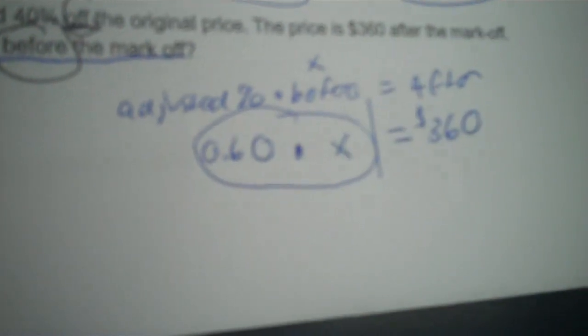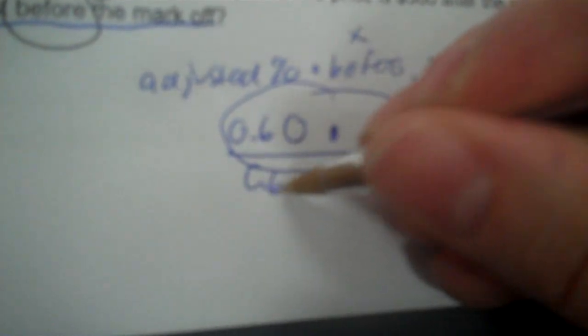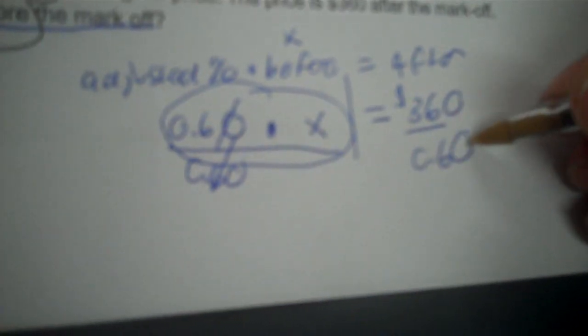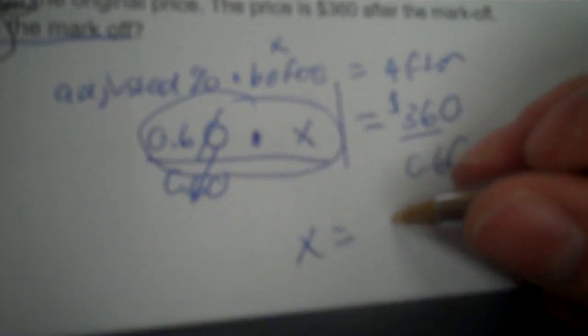We have to get X by itself. It's multiplied by 0.60, so we divide by 0.60. That gives me $600.